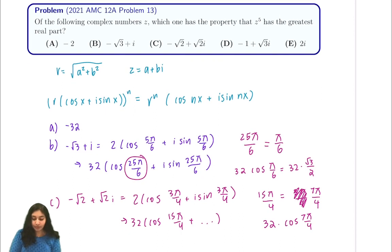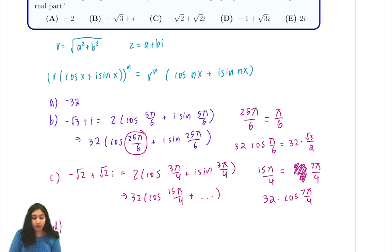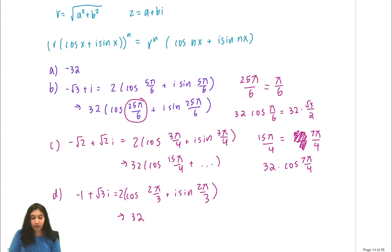Then we look at part D. In part D we have negative 1 plus the square root of 3i. This is equal to 2 times the cosine of 2π over 3 plus i sine of 2π over 3. When we take to the power 5, this is 2 to the 5, which is 32, times the cosine of 10π over 3.